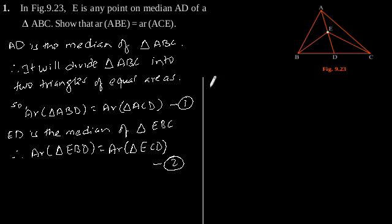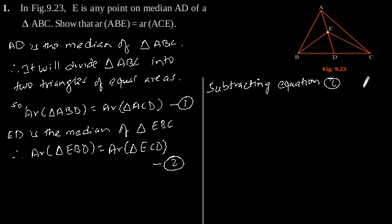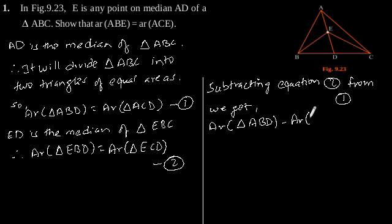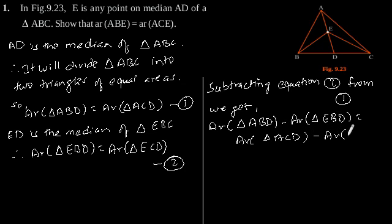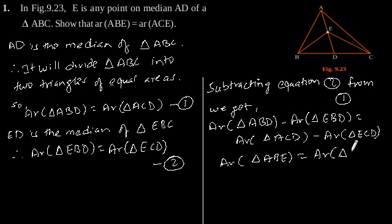Now, subtracting equation 2 from equation 1, we will get: area of triangle ABD minus area of triangle EBD equals area of triangle ACD minus area of triangle ECD. This gives us area of triangle ABE is equal to area of triangle ACE.